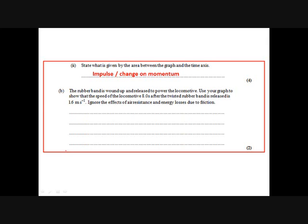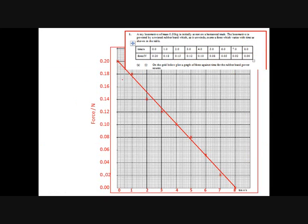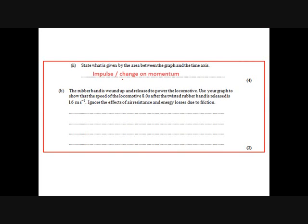So the rubber band is wound up and released to power the locomotive. Use your graph to show the speed of the locomotive eight seconds after the twisted rubber band is released is 1.6 meters per second. Ignore any other effects. So what we need to do is take our indication from this little bit here, which they've given you as a clue of how to do this question. We're looking for a change of momentum.